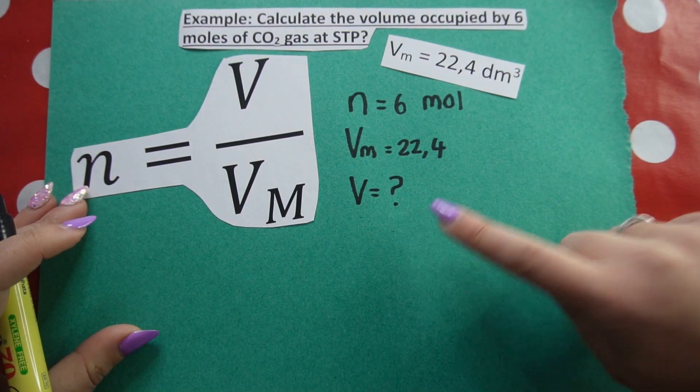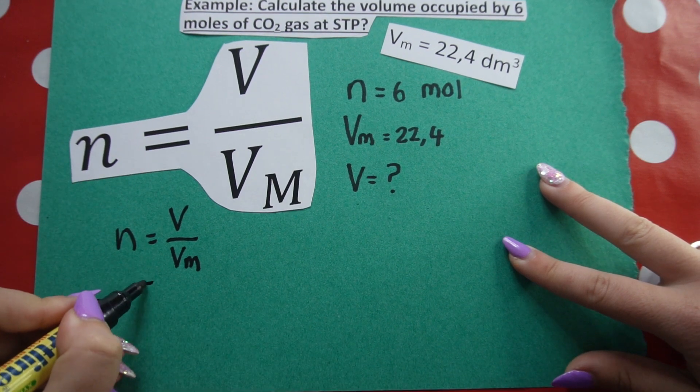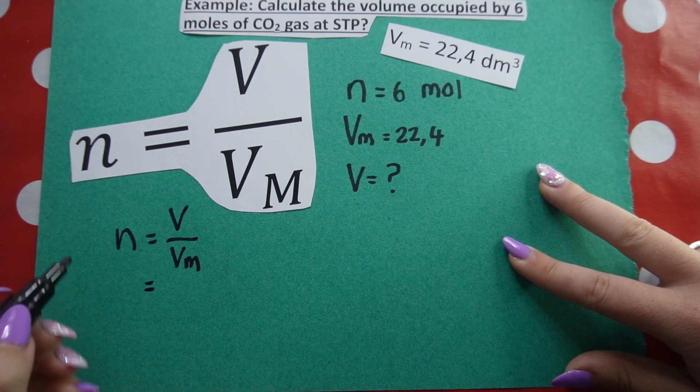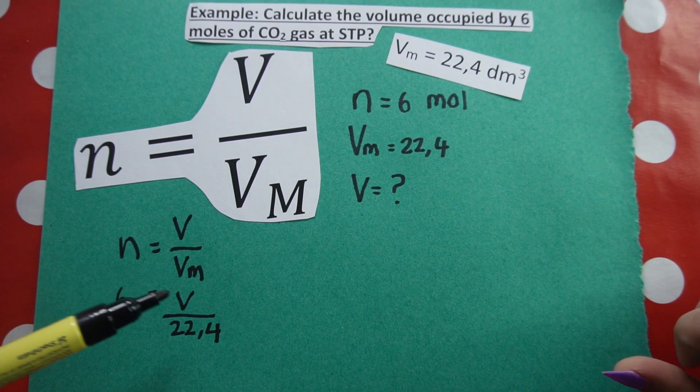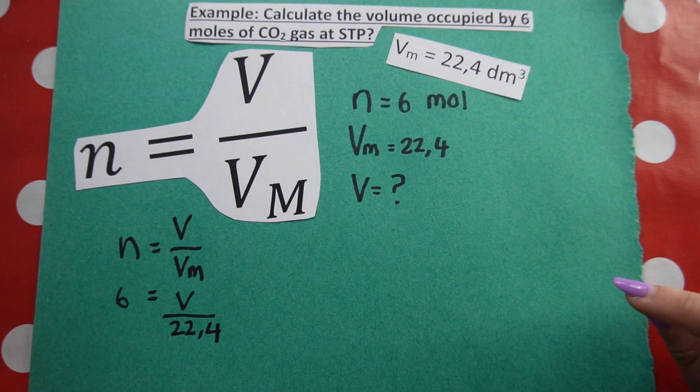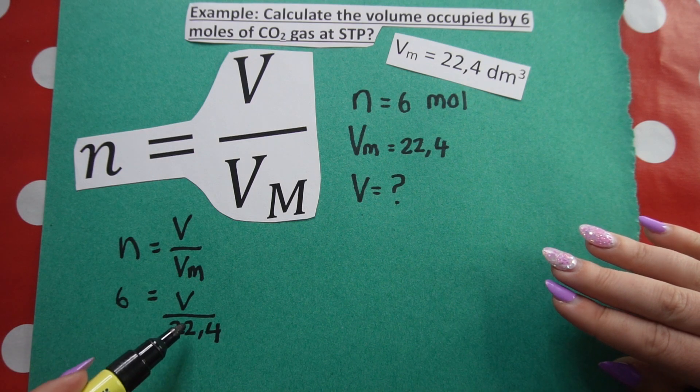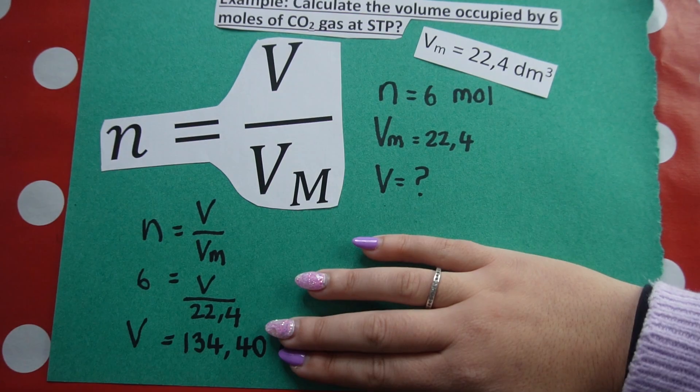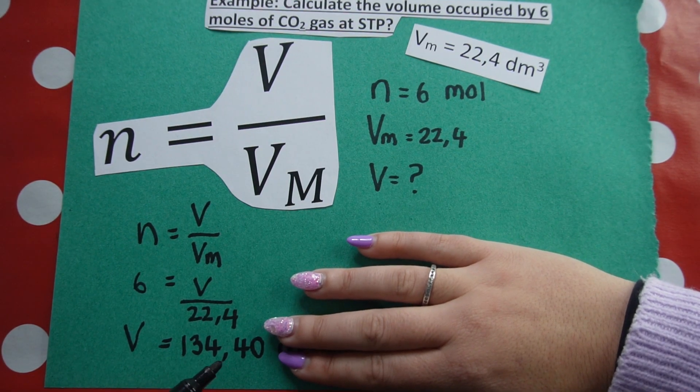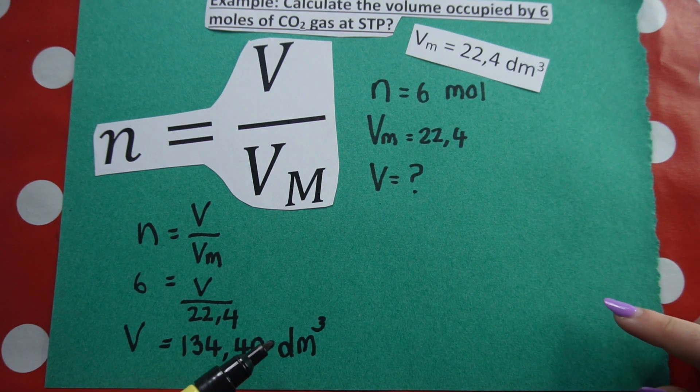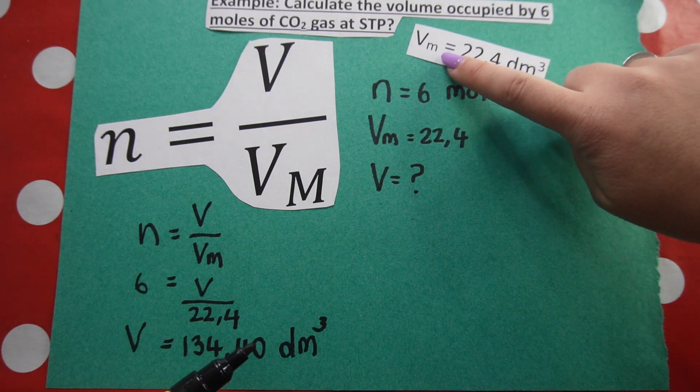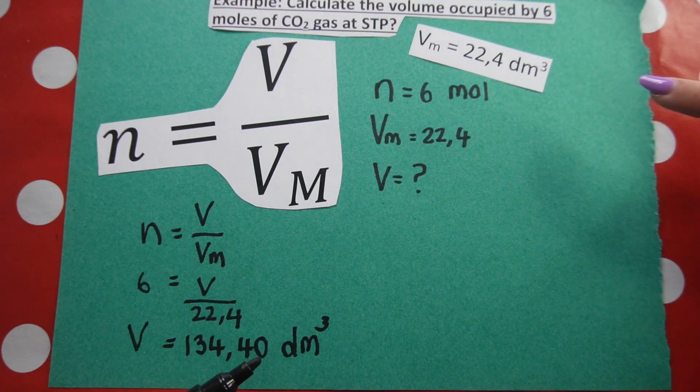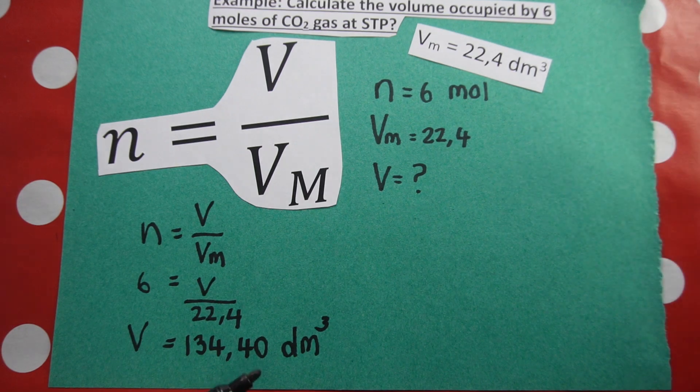That's going to be 22.4 cubic decimeters. So I wrote my variables down, I wrote my formula down, I substitute into my formula. Now remember, because I'm at STP, I know that molar volume is 22.4. Then I solve for V by saying six times 22.4. I get 134.40 cubic decimeters. Your unit will be cubic decimeters because my constant molar volume at STP is 22.4 cubic decimeters.